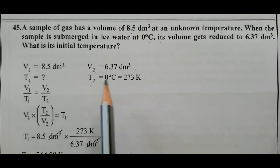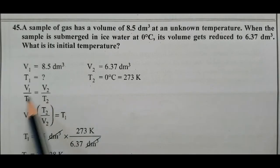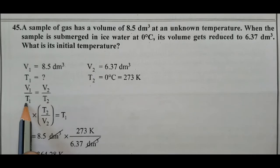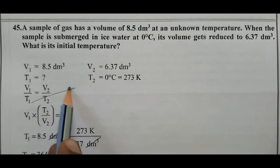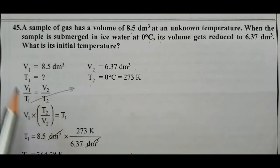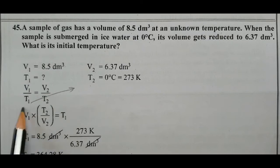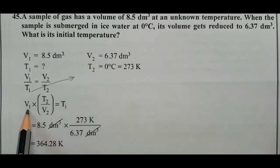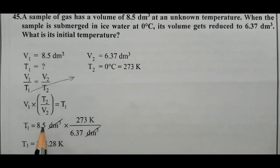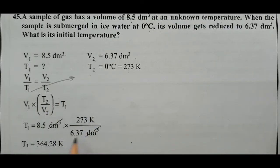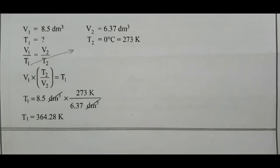According to Charles's Law, V1/T1 = V2/T2. We have to determine T1. Rearranging: T1 = (V1 × T2) / V2. Substituting: T1 = (8.5 × 273) / 6.37.